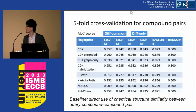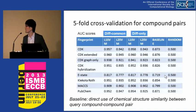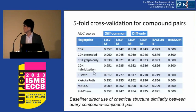We also defined a baseline method: direct use of chemical structure similarity between query compound pairs. As you can see, all of our proposed methods performed better than the baseline. L1 SVM performed a little bit better than L2 SVM. There were no significant differences among the eight fingerprints, and no significant difference between diff-common and diff-only feature vectors.